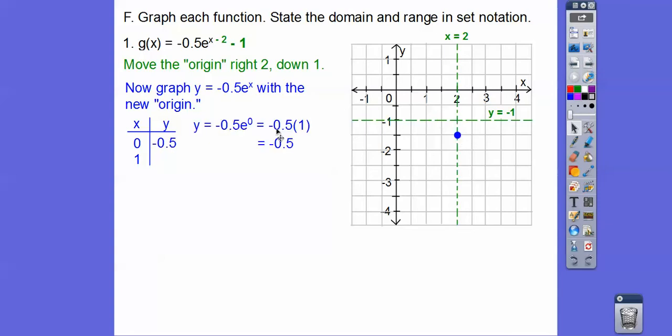And then let's plug in 1 right here. So 0.5 times e to the 1 is 0.5 times e, which is about 1.4. So when we go over 1, it's going to go down 1.4, so down right about there. So when we go over 1, it goes down 1. There's 0.5, so 0.4 is like right about there. All right, now how do we get these points?